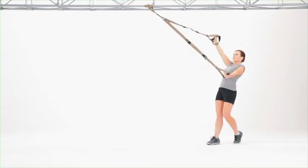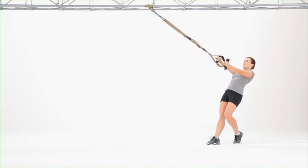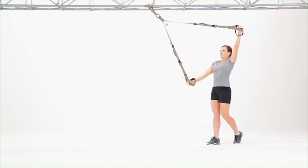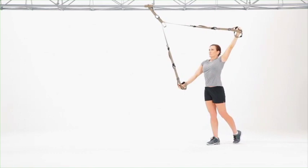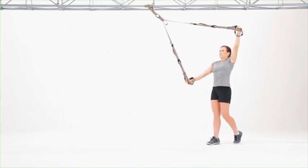Keep tension on the suspension trainer and your body moves as a plank as you lean back, bringing your hands together, then alternating which arm drives up and which arm drives down.